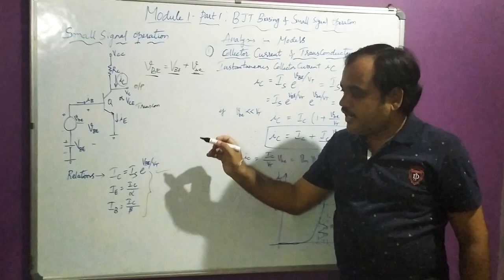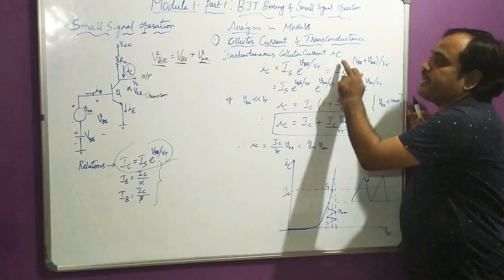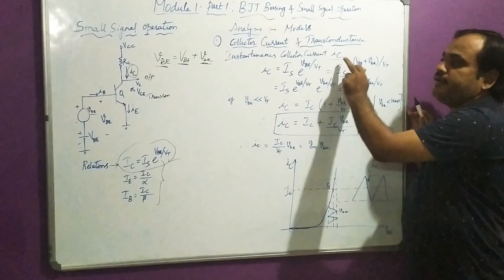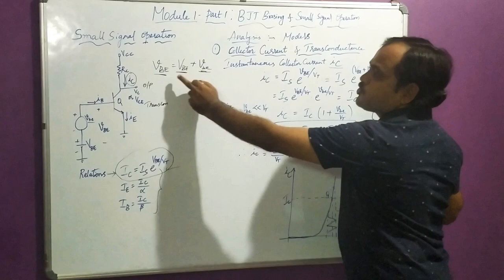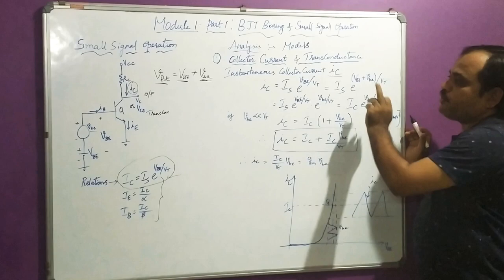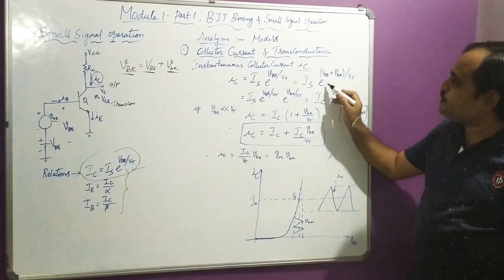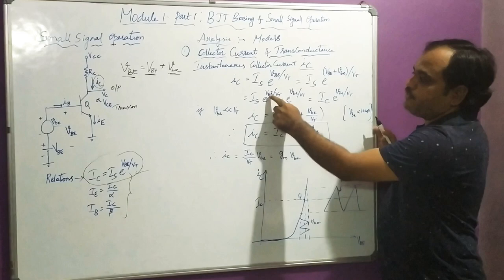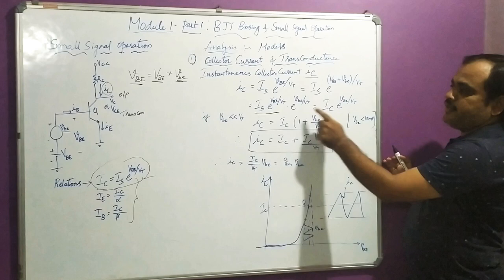I am going to use the diode equation IC = IS × e^(VBE/VT) and write it in terms of instantaneous collector current, small i capital C. So instantaneous IC = IS × e^(small v_VBE / VT). Now the instantaneous voltage small v_VBE = VBE + small vBE, where VBE is DC and small vBE is the small signal. Using the property e^(A+B) = e^A × e^B, I can write: IS × e^(VBE/VT) × e^(small vBE/VT), which equals IC × e^(small vBE/VT).